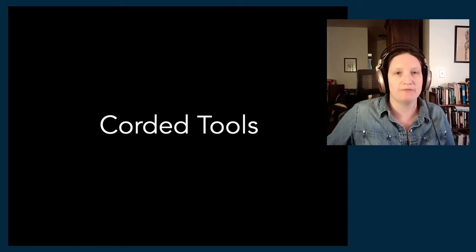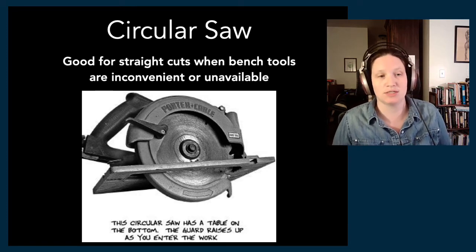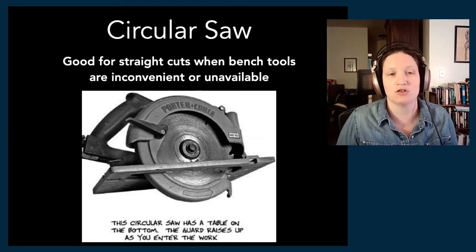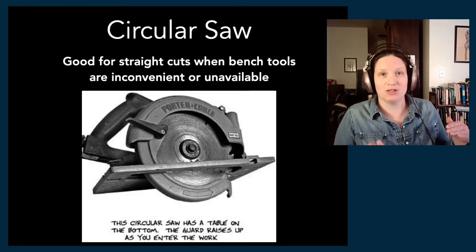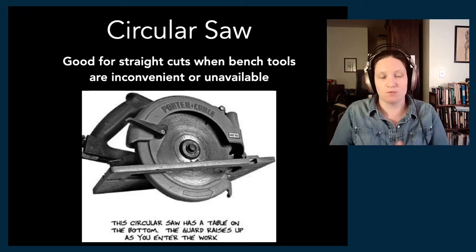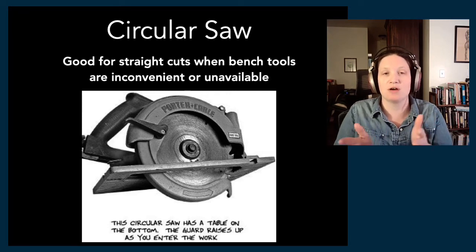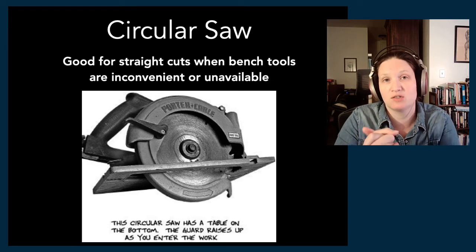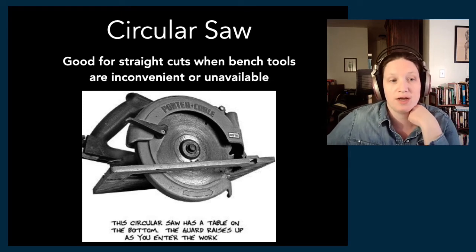The corded tool you might first run into is the circular saw. If you don't have bench tools like a table saw or a miter saw, a circular saw is good in that case. Circular saws are meant for long straight cuts — they're not meant for carving shapes. It's a fast, one-direction blade situation. You do have to hold it straight, and you can use a guide to keep it straight. This is what we'd use when we don't have a table saw but still need to cut a piece of plywood down.